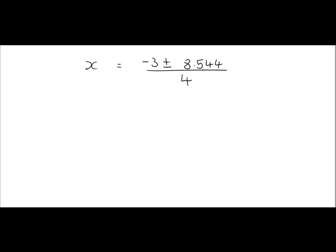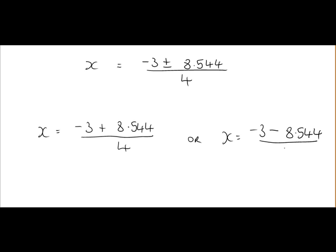At this point, it breaks into two equations, the reason for that being the plus or minus here. So we write it as x is equal to minus 3 plus 8.544 all over 4, or x is equal to minus 3 minus 8.544 all over 4.